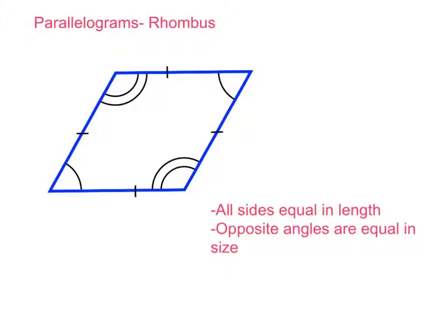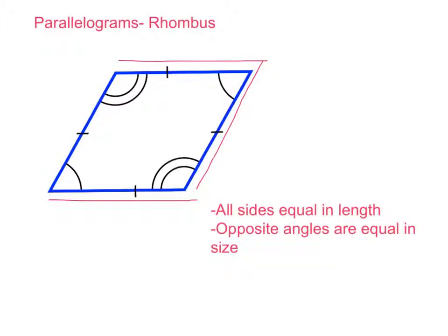Our next example of a parallelogram is the rhombus. With the rhombus, all sides are equal in length — this side is equal to this side, which is equal to this side, which is equal to this side. We know that these sides are equal in length because if we look at our rhombus, they're annotated. We've got the same lines on each side — one line on each side — which means all the sides are equal in length.